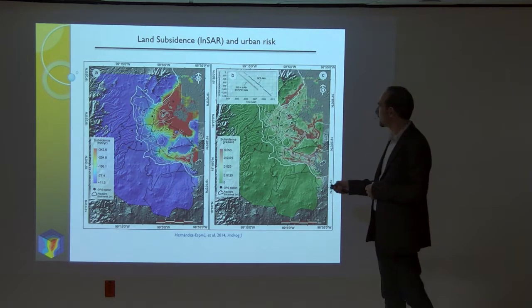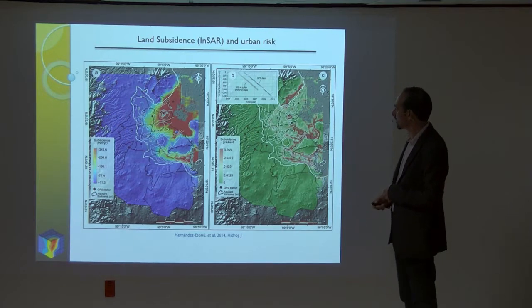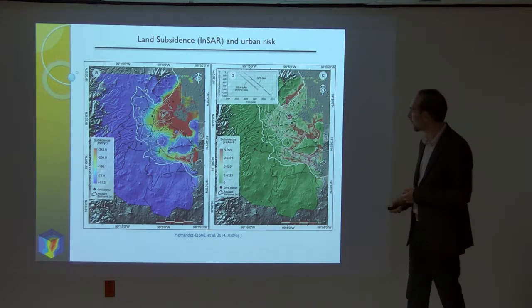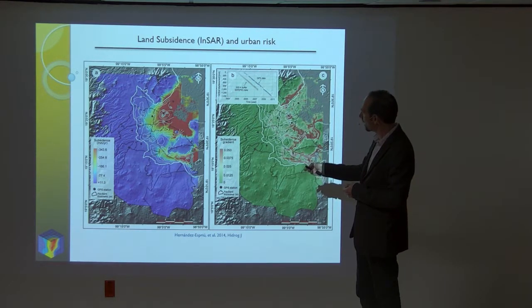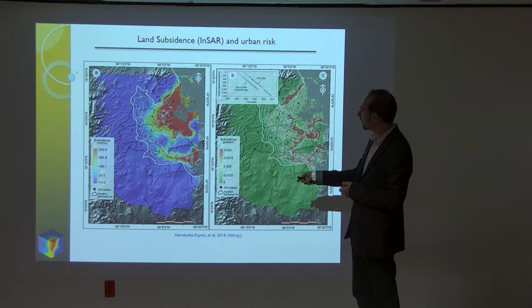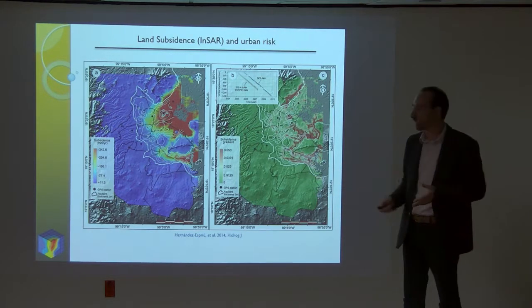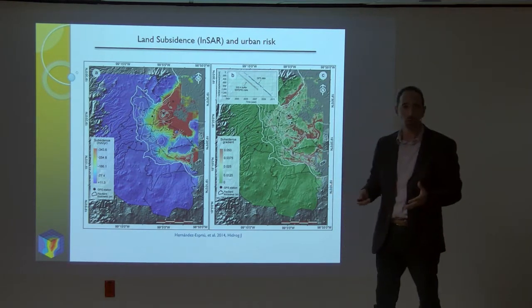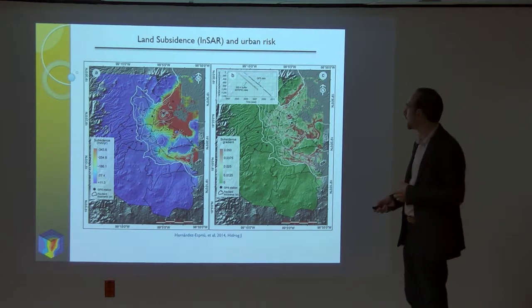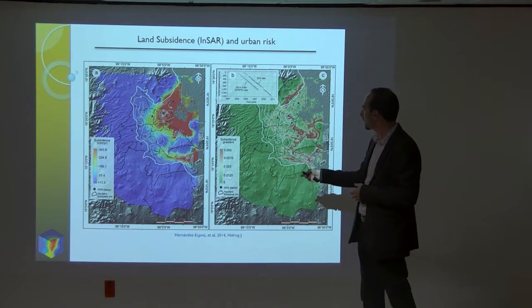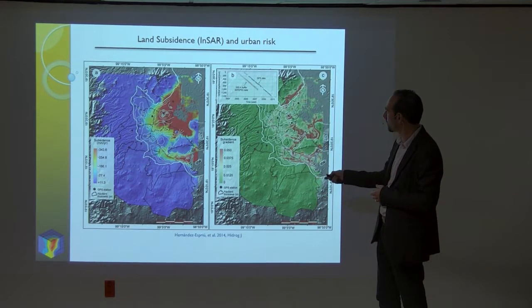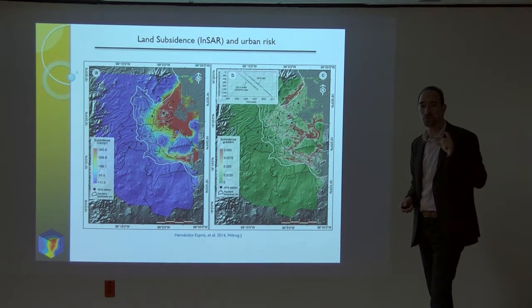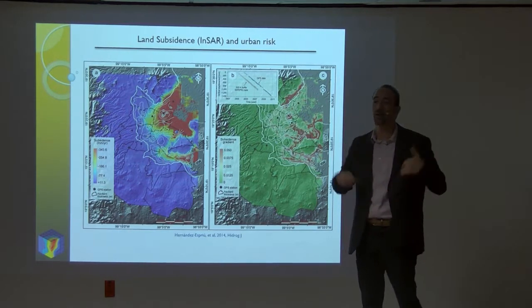We performed subsidence analysis using InSAR images. You can see here the spatial distribution of the subsidence rate in Mexico City. The red zones show values of almost 40 centimeters per year in the eastern part of Mexico City, mostly related to the former Great Lake. We found a very good correlation between high subsidence rate zones and the aquitard thickness — where the aquitard is thicker, we have more subsidence.